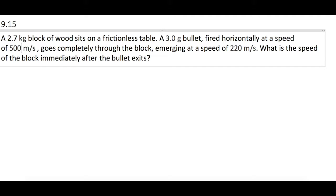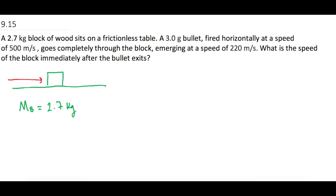All right, so let's draw a picture. We have a block of wood right here sitting on a table, and I'm going to have a big M for the mass of the block. It's equal to 2.7 kilograms. Then they say that a 3 gram bullet comes and hits the block of wood at 500 meters per second and exits the block at 220 meters per second.